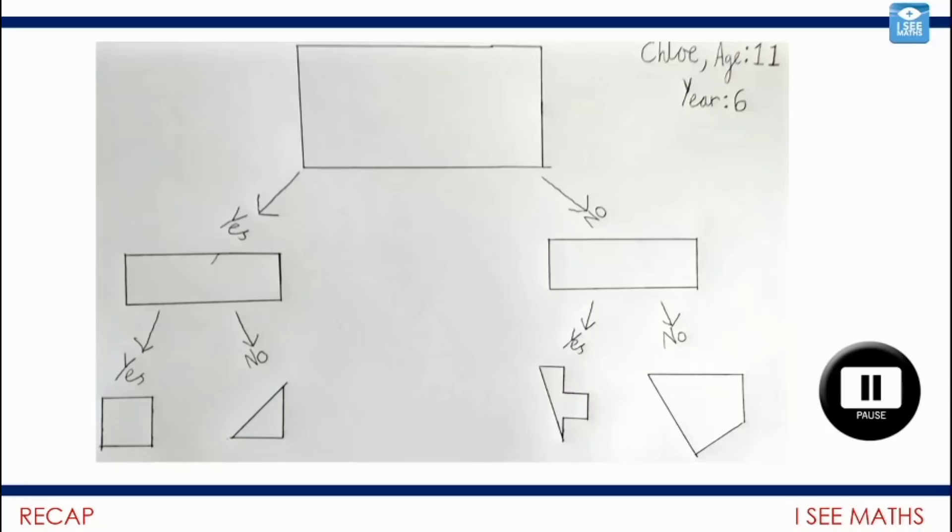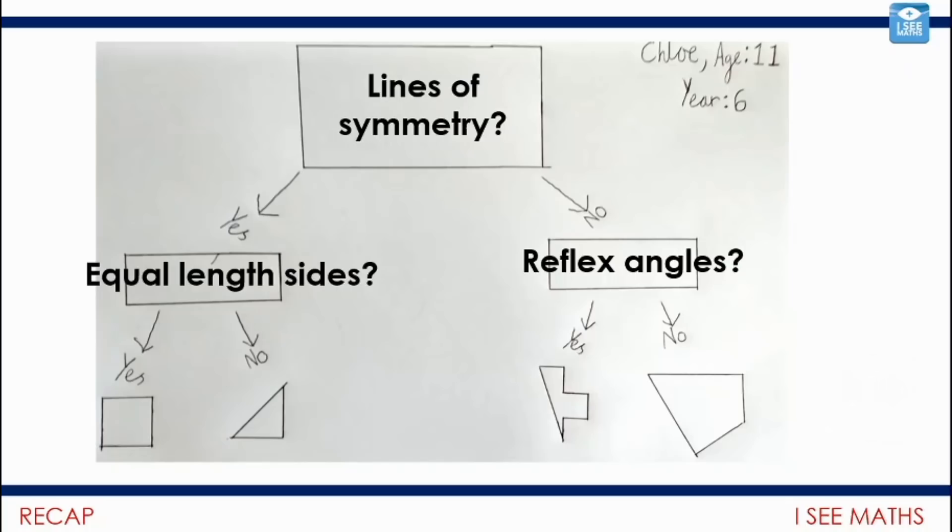Okay, and let's have a look. These are the examples that Chloe actually sent through as well. So we had lines of symmetry. Yes for these two shapes, they have lines of symmetry. No for those two, they don't have lines of symmetry.